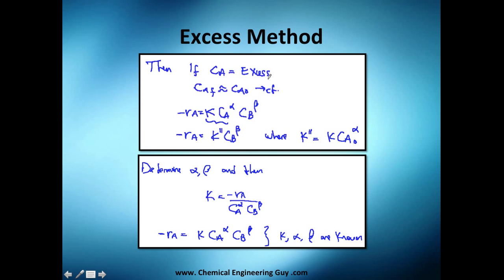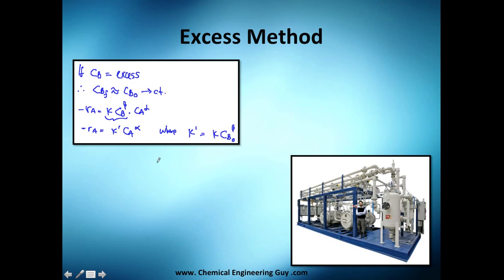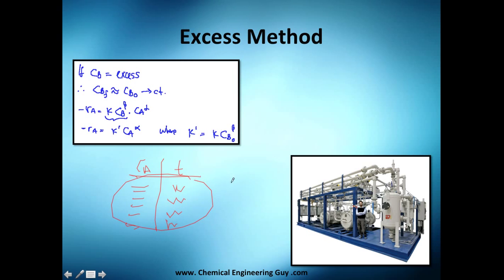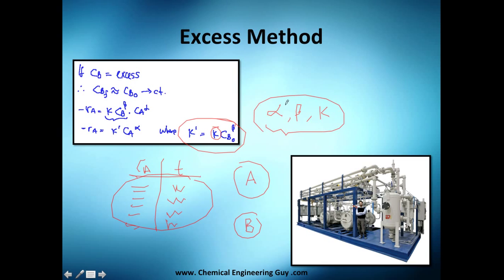Now we're ready for analysis. With concentration of A versus time data, we can treat the reaction as if it only depends on A. We fit that data to get α, then do the same analysis for B to get β. Using both relationships, we can ultimately extract our true rate constant k, along with the reaction orders α and β.